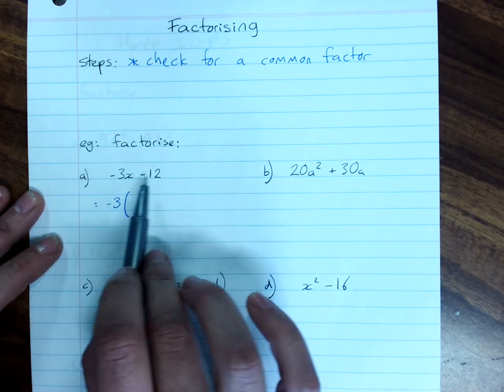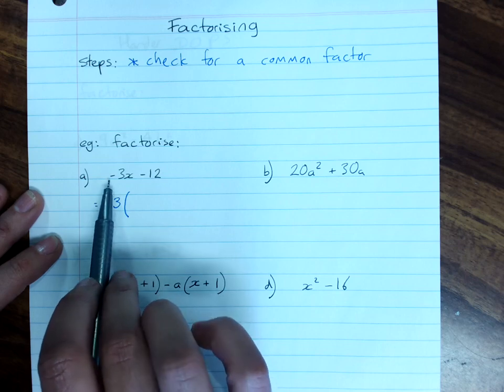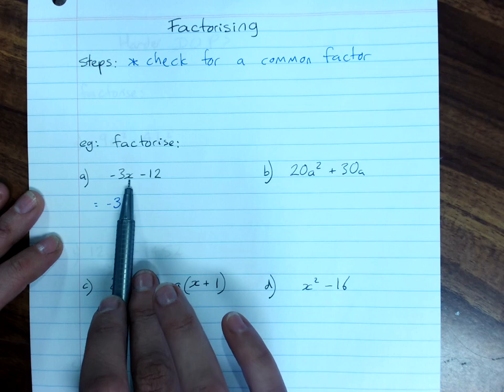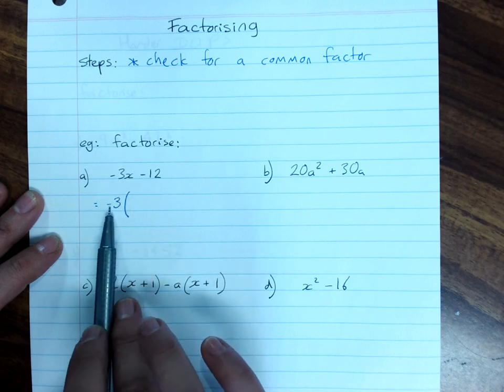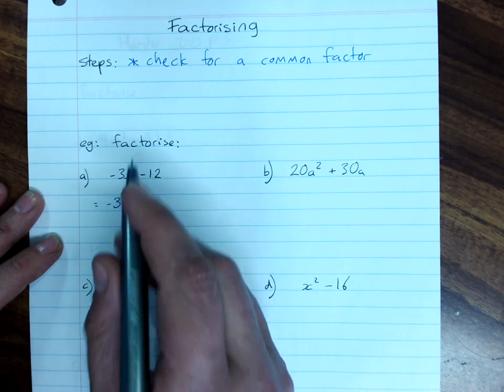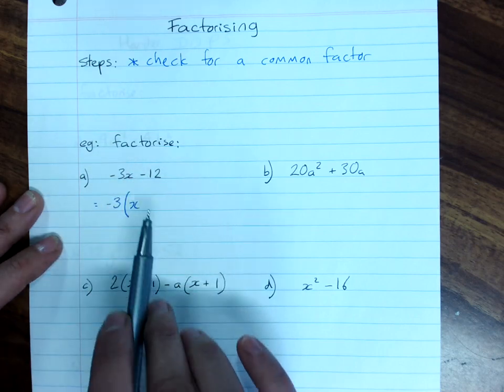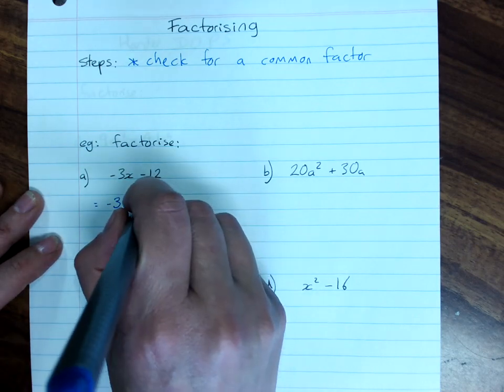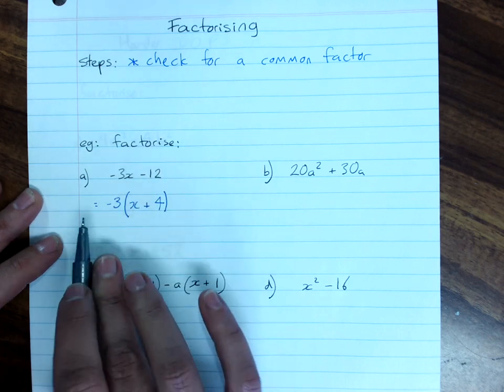So negative 3 out the front of the brackets, and then you're dividing each term by the highest common factor and putting the remaining factors in here. Negative 3x divided by negative 3 just leaves me with x. Negative 12 divided by negative 3 leaves me with positive 4. That's factorized.